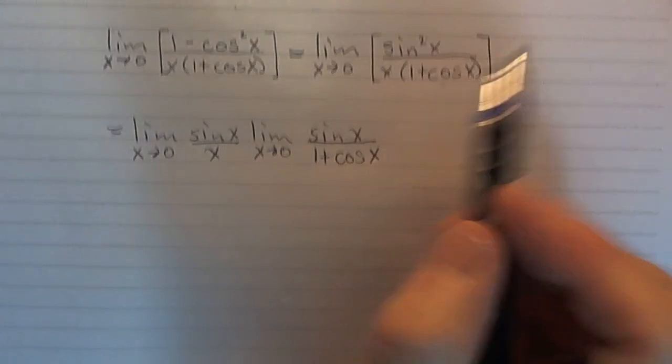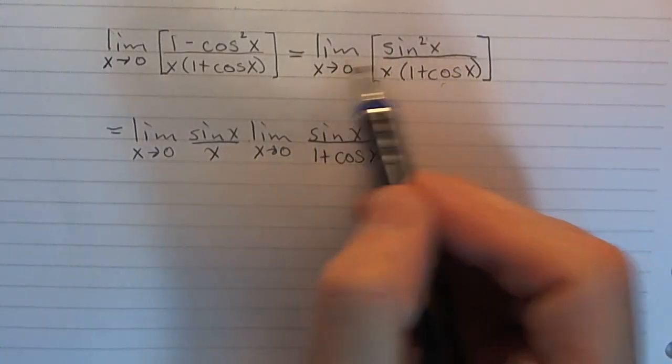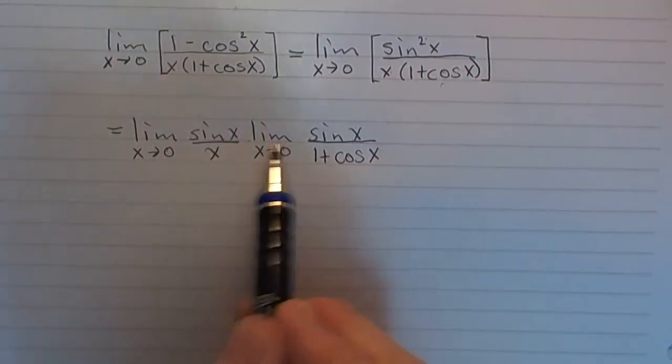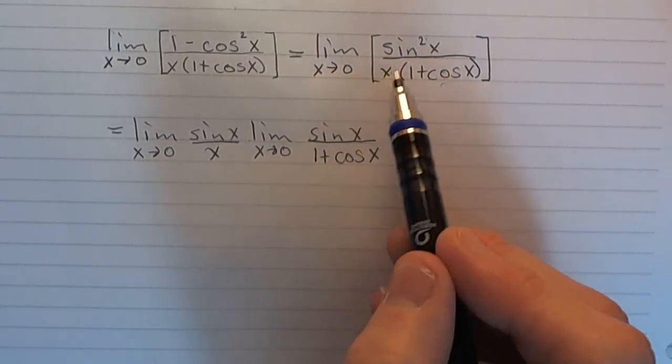Remember, this is one of our properties, that if we've got a product, a limit of a product, we can write that as a product of the limits. So I just made two limits out of this.